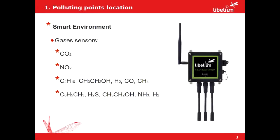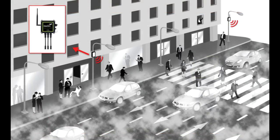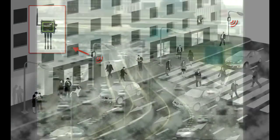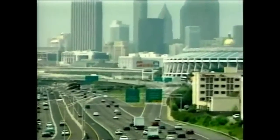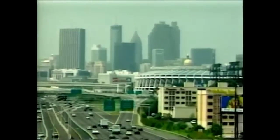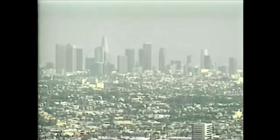In this slide we are going to see the first application. It consists of the location of polluting points. For that purpose we have the smart environment line, which includes different sensors like carbon dioxide, nitrogen dioxide and so on. As you see, the deployment of these boxes would permit us to know the polluting points in the city due to the traffic. This is one of the most concerning problems in modern cities in the last few decades.